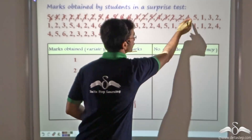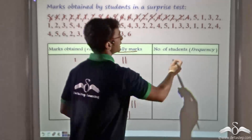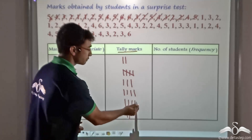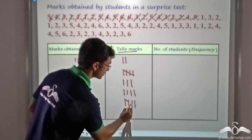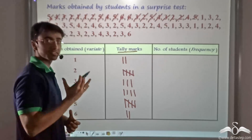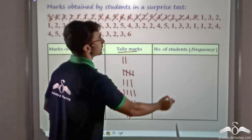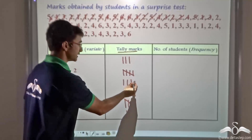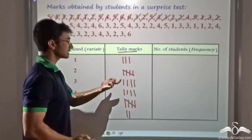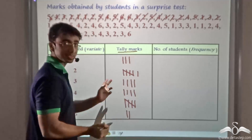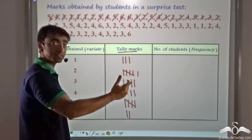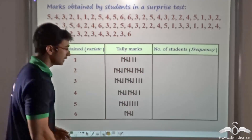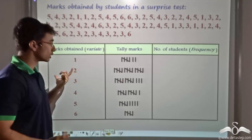Moving on, we have another occurrence of 1, so we place a tally mark. Another occurrence of 3, so another tally mark. And an occurrence of 2, so once we have obtained a block of 5, we proceed in a similar manner with the tally marks. This crossing out of 4 tally marks occurs every 5th occurrence of a particular variate. In this manner we continue for the 2nd line as well as the 3rd line. And this is what we get — we have drawn the tally marks for all the variates that have been considered.